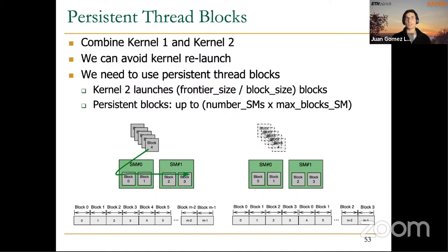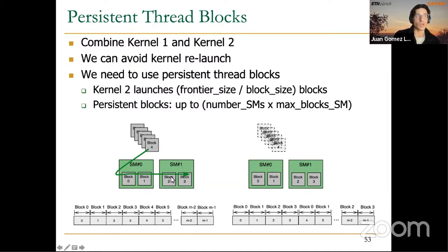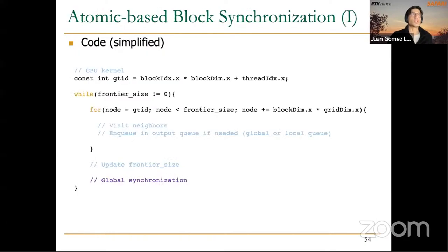In the original approach, we didn't know the scheduling order of blocks 0 through M, so we couldn't synchronize them using global memory. With persistent thread blocks, we can use atomic-based block synchronization in global memory. This is the overall structure or skeleton of our parallel BFS algorithm. The BFS continues iteration after iteration until there are no new nodes in the output frontier — when the frontier size is zero, we have visited all reachable nodes.